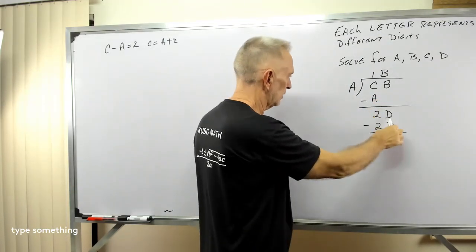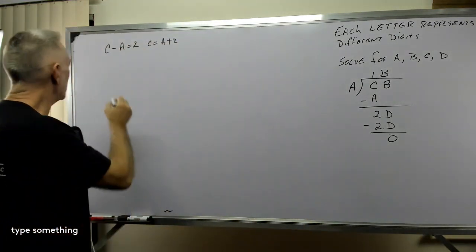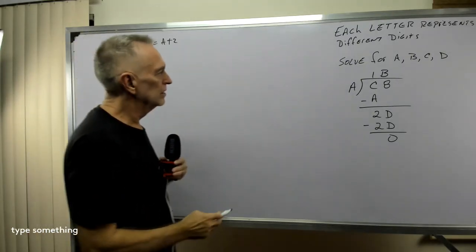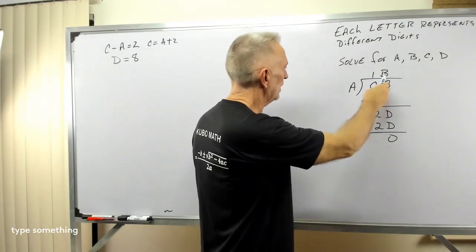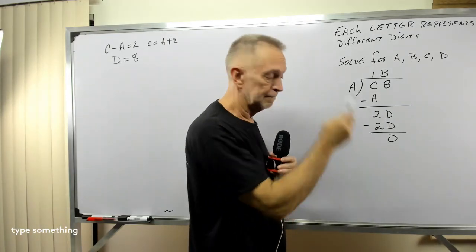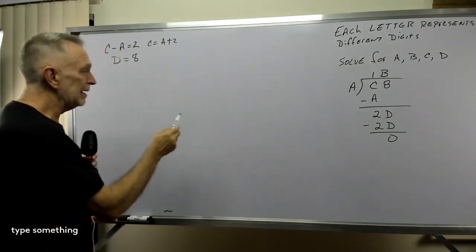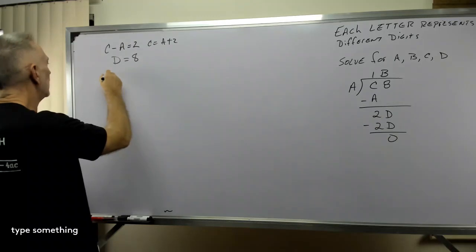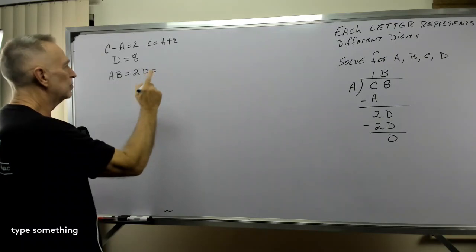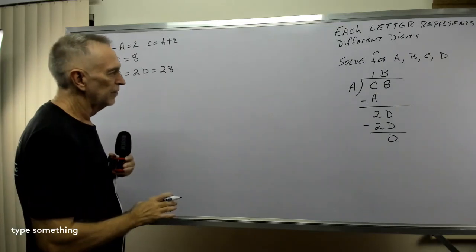Okay, so C minus A equals 2. I would bring down the 8. Oh, but it's a D. That's my next clue. D equals 8. D equals 8. All right, then they say, well, I've got B times A or A times B, and that gives me 2D. That's another clue. So 2D minus 2D equals 0. So AB equals 2D, but recall D equals 8, so that equals 28. AB equals 28.